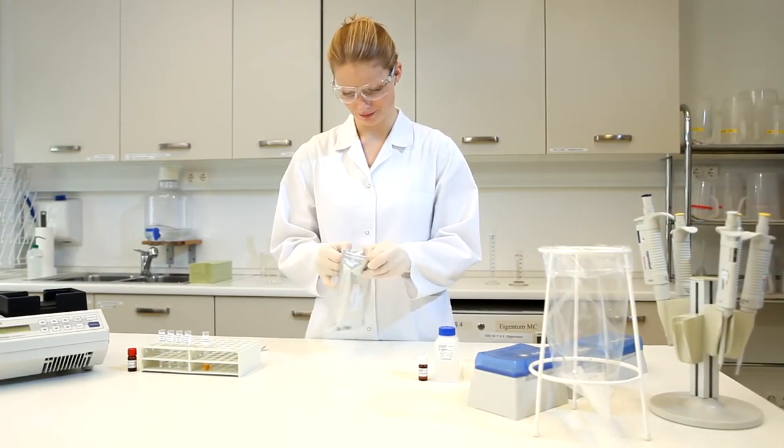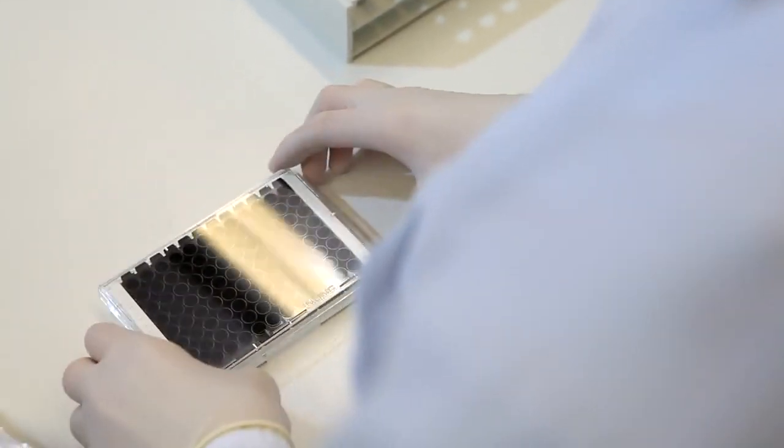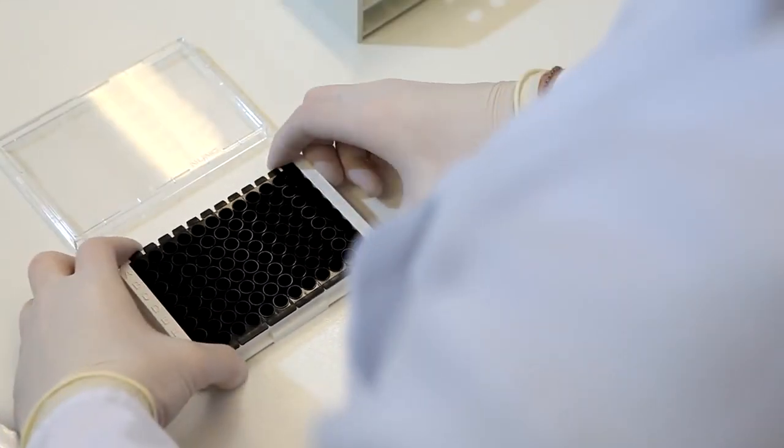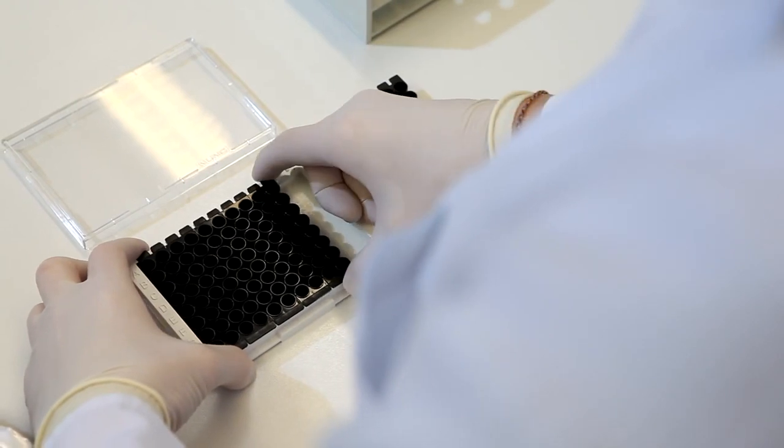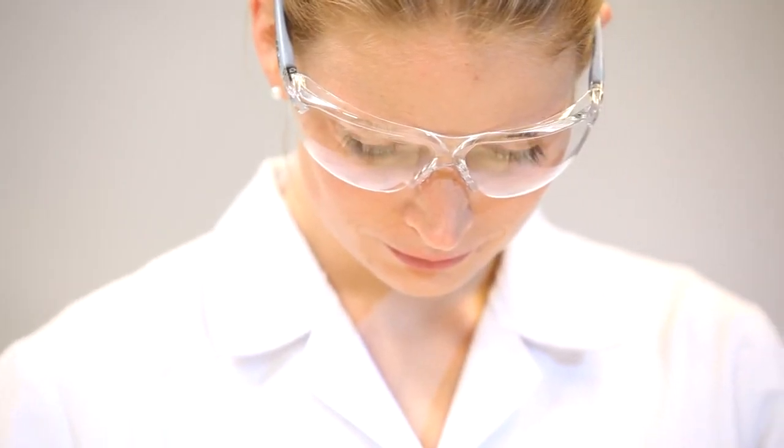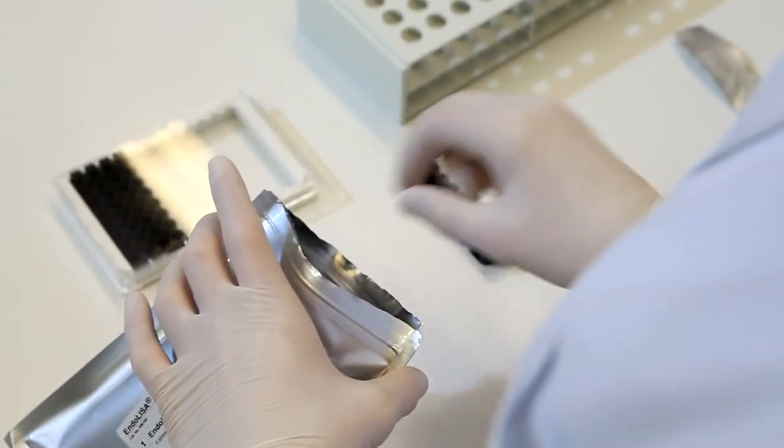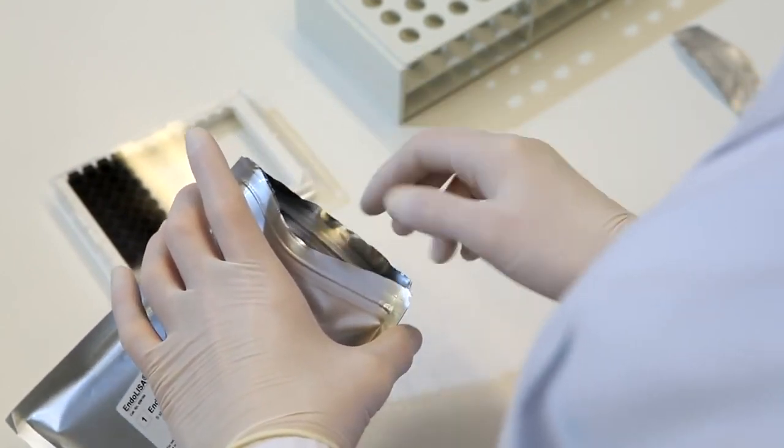Remove unused strips from the microplate. Put these in the resealable aluminium bag provided and store at 2 to 8 degrees.